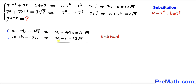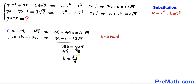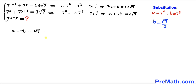Changing the signs and subtracting: 49b − 7b gives 48b, and the right-hand side gives 18√7. Dividing both sides by 48, the value of b simplifies to √7/6.